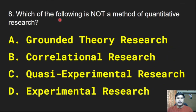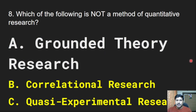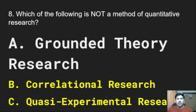Next question: Which of the following is not a method of quantitative research? Options: grounded theory research, correlational research, quasi-experimental research, experimental research. Correct answer is option A, grounded theory research. Grounded theory research is an example of qualitative research — it is a systematic methodology that has been largely but not exclusively applied to qualitative research conducted by social scientists.